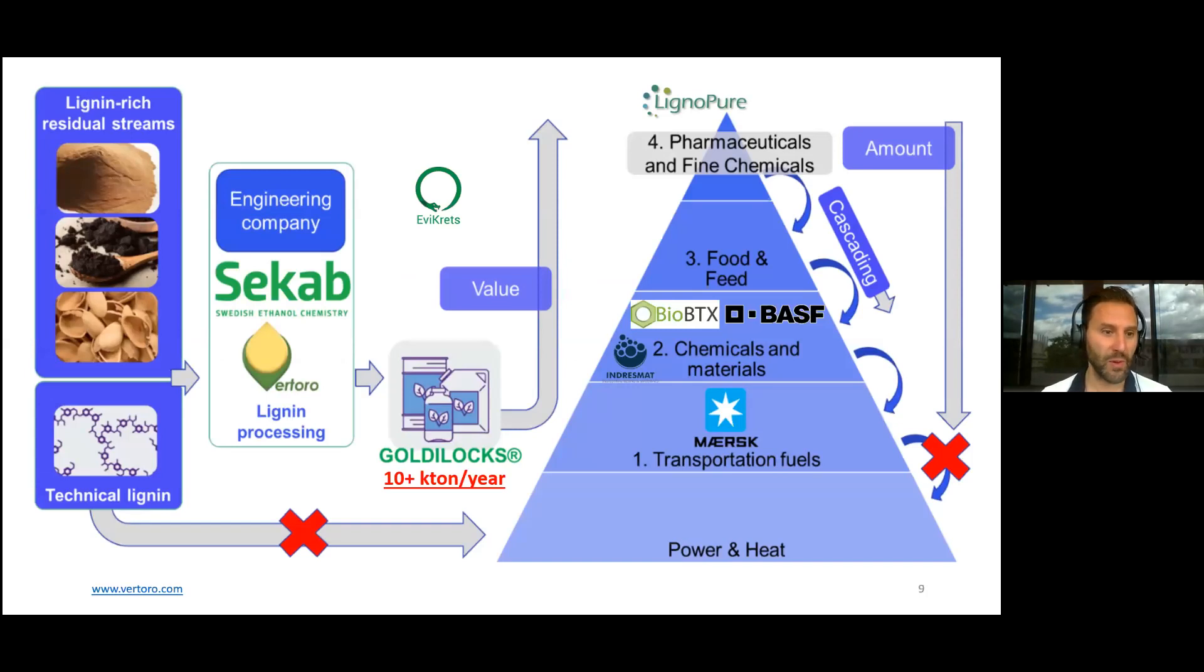All the logos that are in now have already committed to join the project. What we will do is we will convert both technical lignins from pulp and paper, as well as biorefineries, together with lignin-rich residual streams that are now burnt. Think about sawdust, coffee grounds, nutshells. We're only looking at biomass that is now burnt, technical lignins or lignin-cellulose streams. We then use the Sekab reactor technology along with our solvolysis and acid solvolysis technologies to scale up to demo scale, 10-plus kilotons, to produce this Goldilocks.